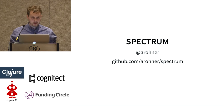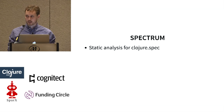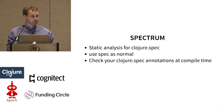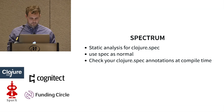So I built a thing. It's called Spectrum. It's static analysis for Clojure.spec. Basically you just use spec as normal, and then instead of running your generative test or instrument or that kind of thing, we'll check your annotations at compile time. There's a function you use at the REPL, and it walks the source code.